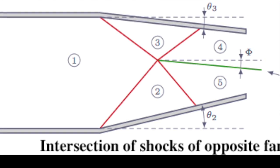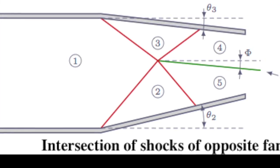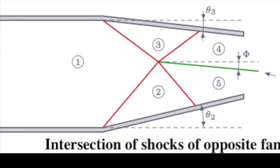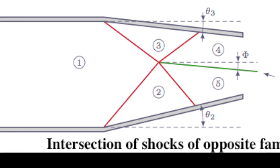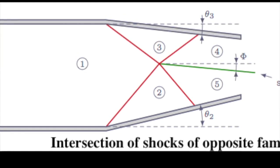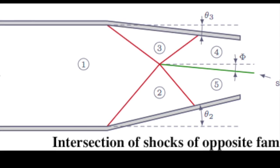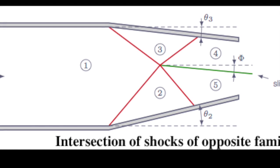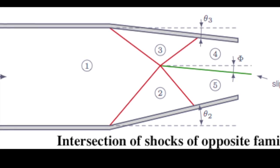Assume theta 2 greater than theta 3 then shock A is stronger than B and the streamline going through the shock system A and C experience a different entropy change than the streamline going through the shock system B and D. Therefore, the entropy in the region 4 and 4' is different. Consequently, the dividing streamline E between these two regions is a streamline across which the entropy changes discontinuously such a line is defined as a slip line.